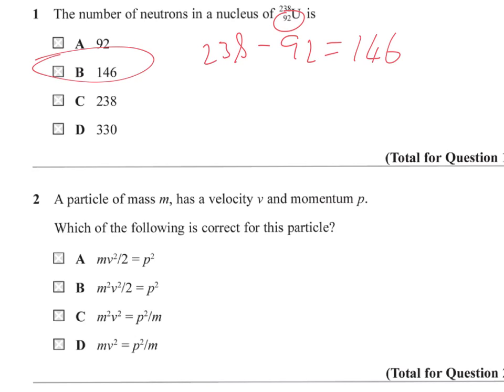Question 2. A particle of mass M has a velocity V and momentum P. Which of the following is correct for this particle? So we've got some expressions here, or equations. So we just take them in turn and see what we can find.